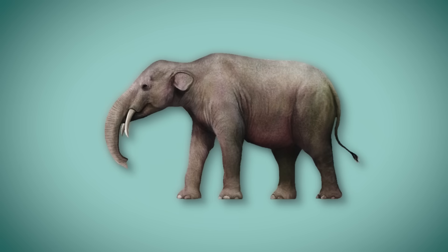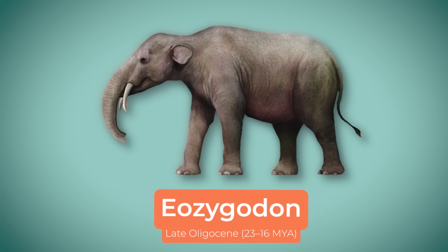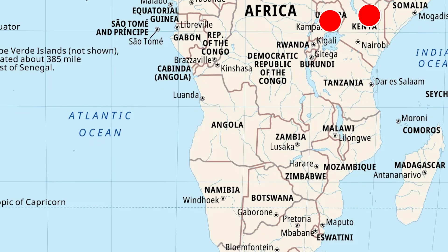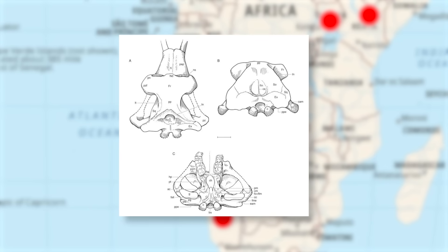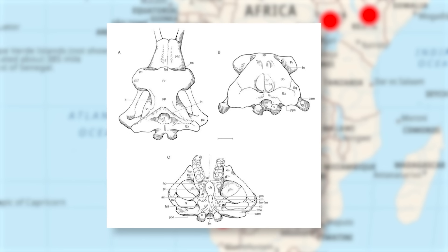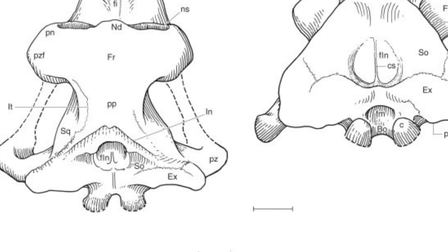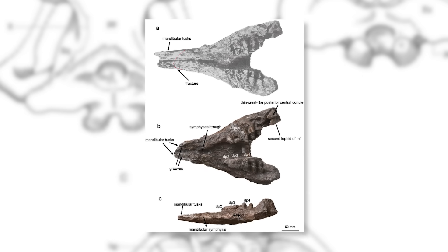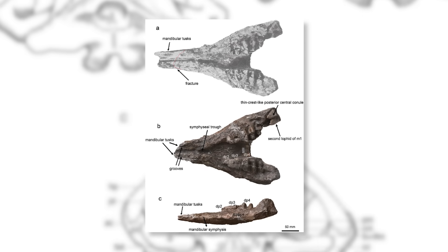The next most basal member of Mammutidae is the early Miocene genus Eozygodon, also present in East Africa, with fossils uncovered in Kenya, Uganda, and Namibia. Though we don't know much about its actual size, some specimens had a skull as large as that of an American Mastodon. This skull was tall and long with a thin nasal region. Additionally, this genus also possessed lower tusks, something we'll see in future genera as well.